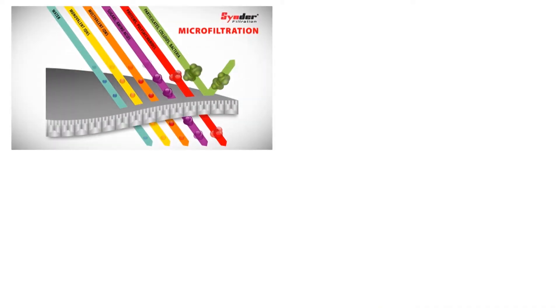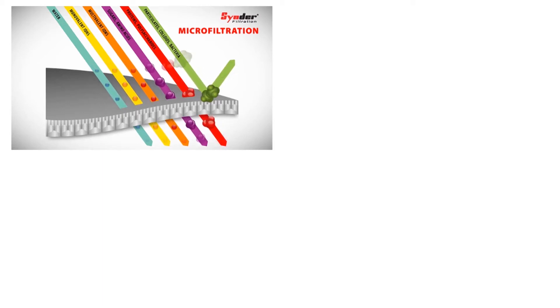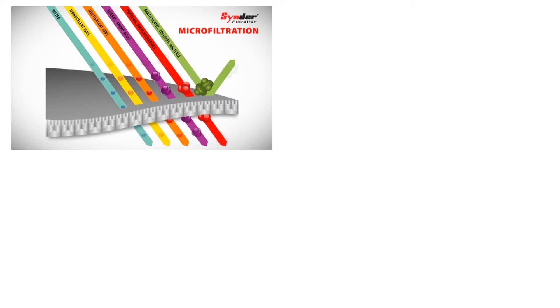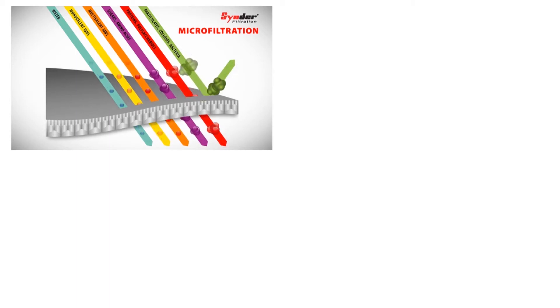We're going to be talking about three different treatment processes in this lesson, the first being membrane filtration. Under the membrane filtration lesson, we're going to be talking about microfiltration. The microfiltration membranes reject particles as small as 0.03 microns, as compared to a multimedia filter which can filter out particles as small as one micron. Microfiltration is used in some applications in place of the mixed-media gravity filters.